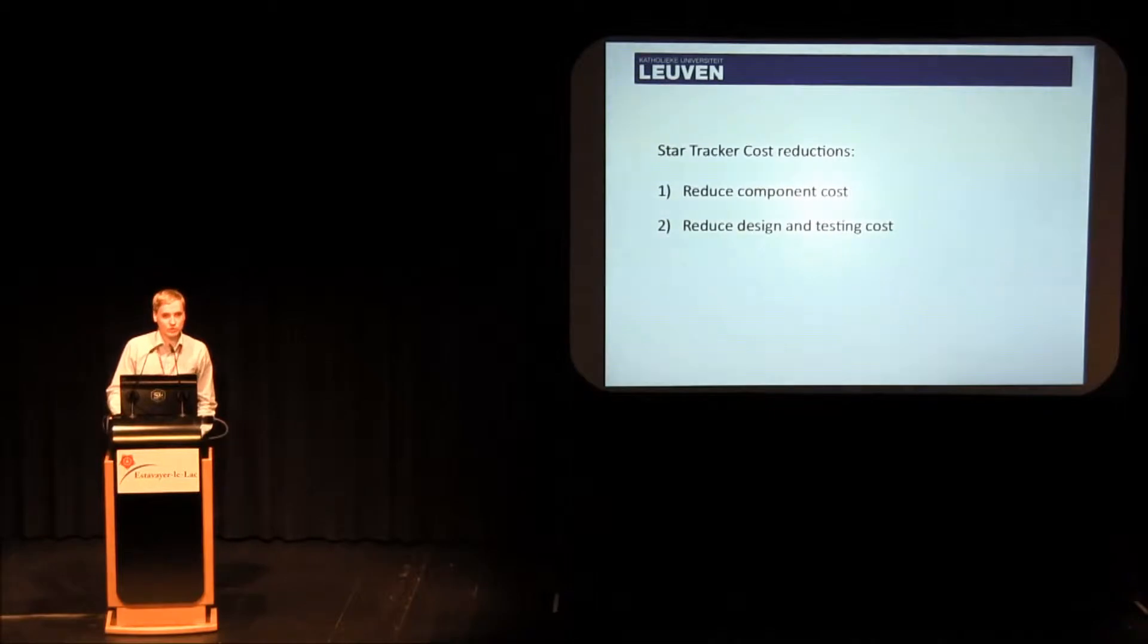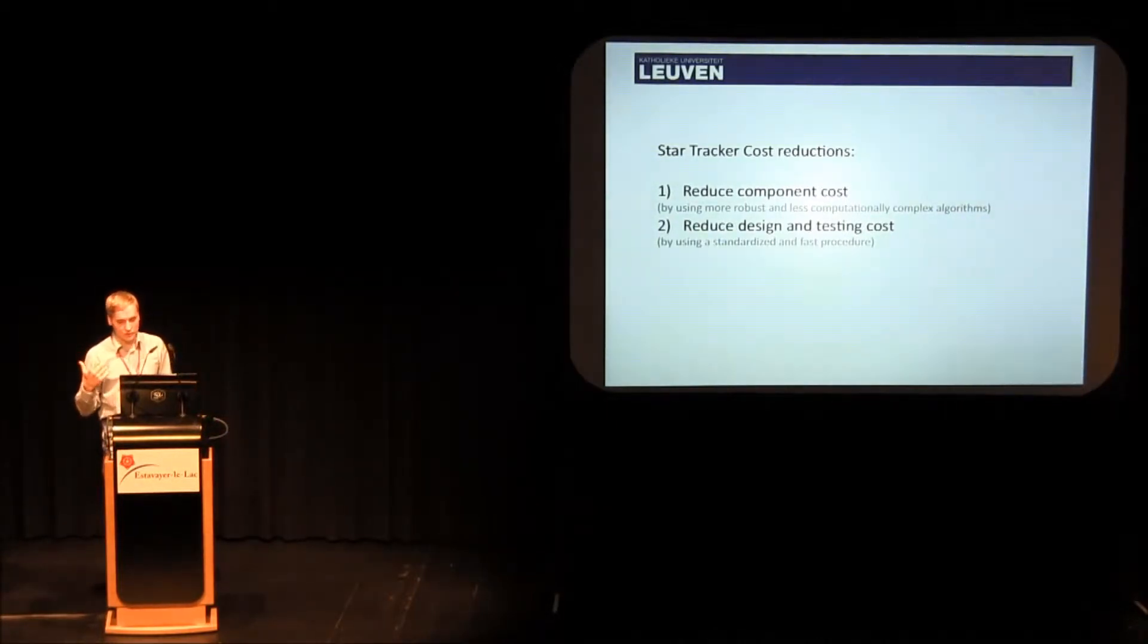I'll talk about two StarTracker cost reductions, two ways in which we try to reduce the cost. That's one, to reduce component cost and two, to reduce design and testing cost. To reduce component cost, what we are trying to do is to use more robust and less computationally complex algorithms, so that we can use less expensive processors and have the same performance with less expensive components. We are trying to reduce the design and testing cost by using a more standardized and faster procedure, which I will introduce at the end of the presentation.